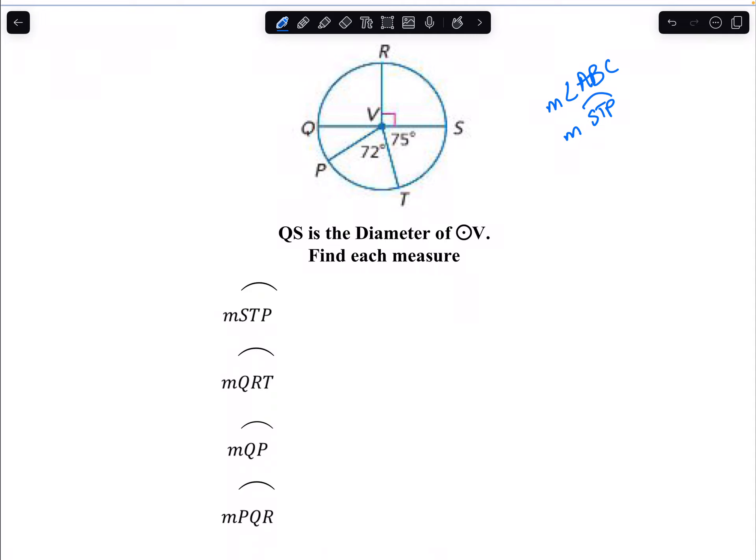So the measure of arc STP, S is where we start, and we're moving T, P in this direction. The measure of this arc, the measure of the angle, is just 72 plus 75, which equals to 147 degrees. 147 is less than half the circle, so we can label this as a minor arc.